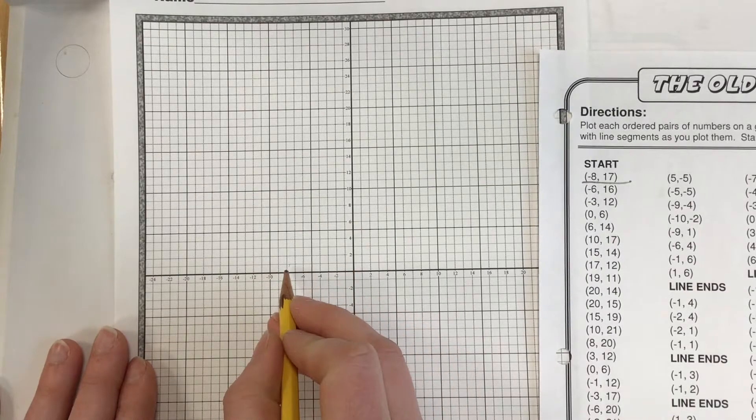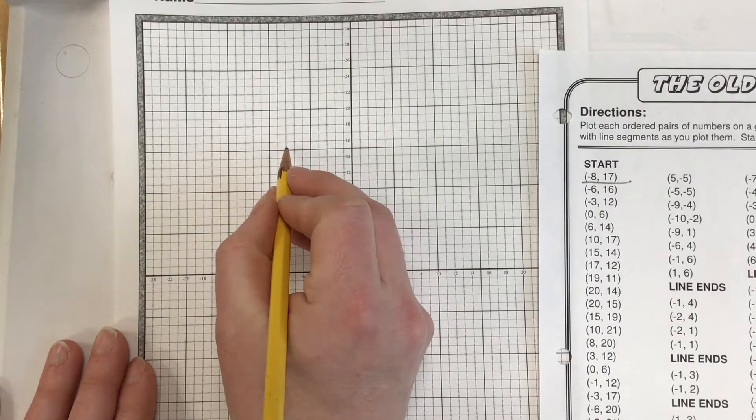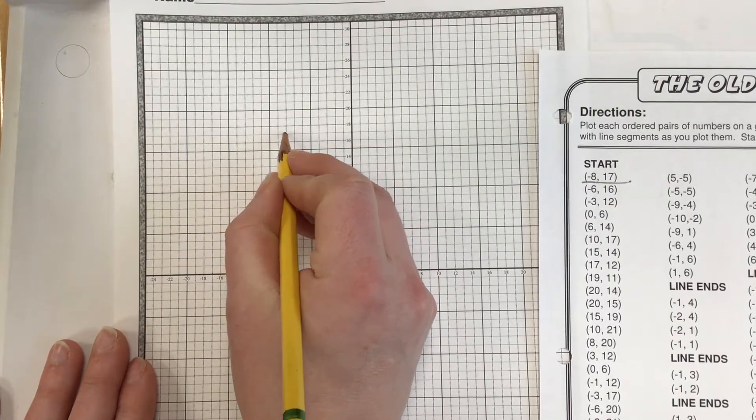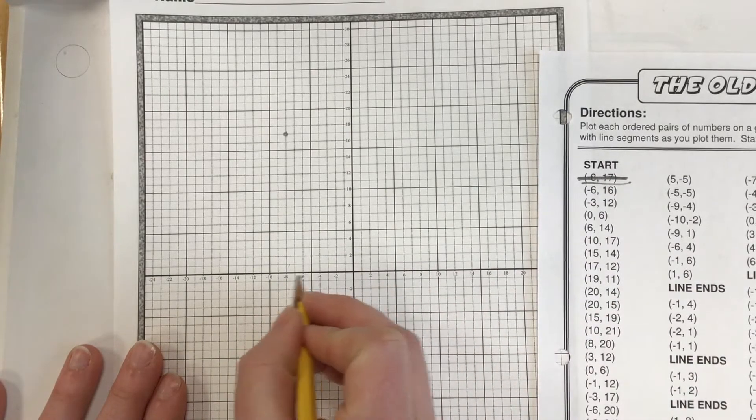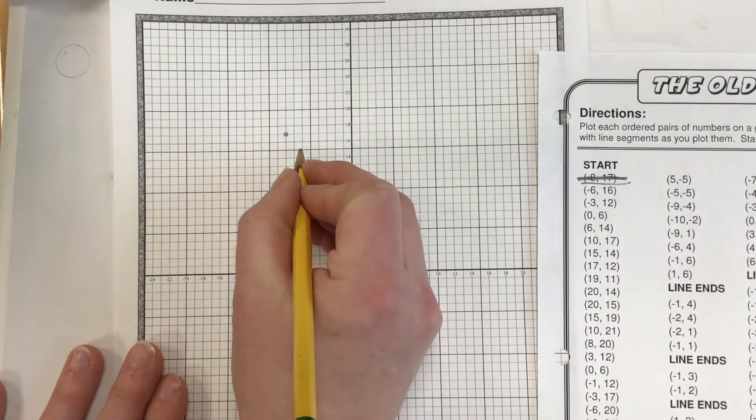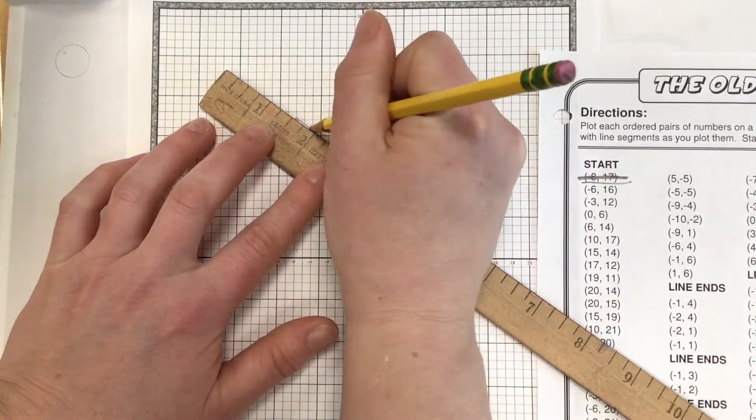Negative eight means over eight, and then up seventeen. This is really helpful. Sixteen, seventeen. Negative six, that means backwards six, and up sixteen, and then you take the ruler and connect them.